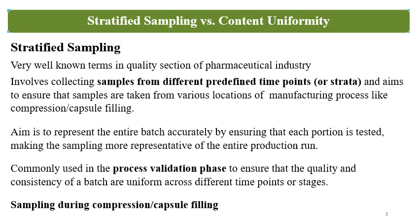Stratified Sampling involves collecting samples from different predetermined time points or strata from the batch. It aims to ensure that samples are taken from various locations of the manufacturing process, like compression or capsule filling. The entire batch run is divided into groups or strata — for compression and capsule filling, these are time intervals. From those locations or strata, samples are taken and tested for assay.